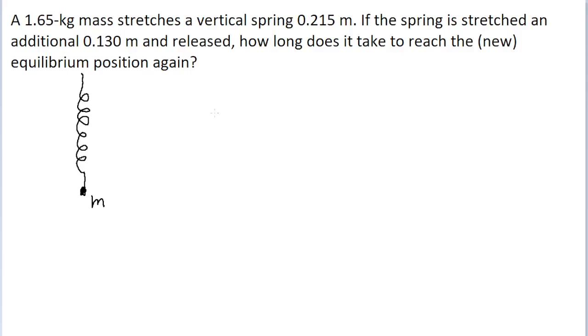In this problem, we have a mass hanging from a spring in a vertical position. There are two different forces acting on the mass: the downwards force of gravity due to the mass, and the upwards force due to the spring. Since it's a spring force, its displacement can be represented using Hooke's Law.